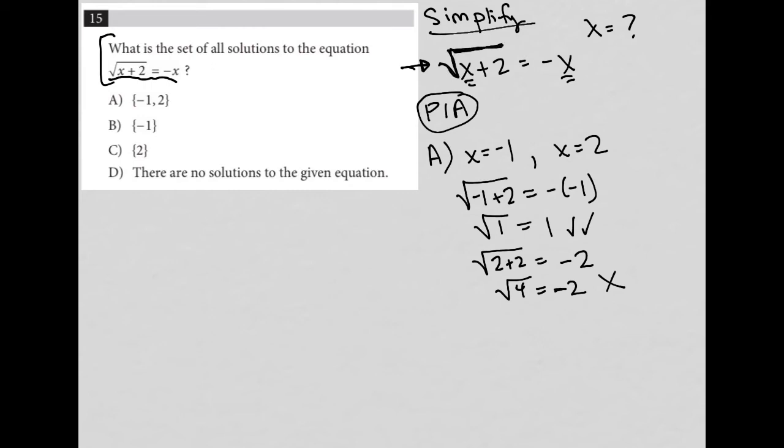The only time we would say that the square root of 4 equals plus or minus 2 is if we have to add in the square root ourselves to solve. It's a subtle difference. If the original question does not have a square root and you are adding it in, let's say it was x squared equals 4 and you're solving for x, you yourself added in the square root, then and only then would you have x equals plus or minus 2.